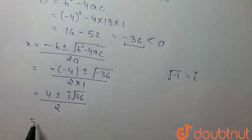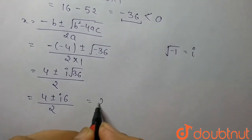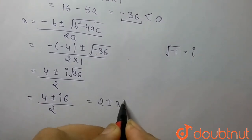So we can put it here. So we get 4 plus minus i 6 upon 2. And it will become 2 plus minus 3i.